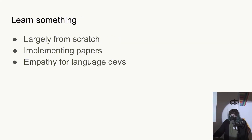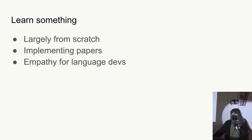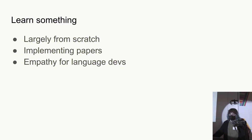I also learned something — I learned a lot. I wrote most of the things you'll see today from scratch, including when it was inadvisable. I implemented some papers; it was the first time I ever really implemented a paper. It was pretty simple, but it was about control flow graphs — how do we know if this line of code will ever result in going to this other line of code? You create a control flow graph to answer those kinds of questions.